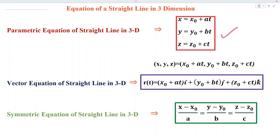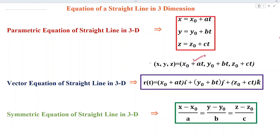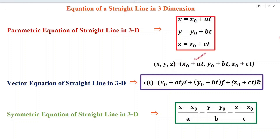After obtaining the parametric form and the symmetric form, we can easily derive the vector form for the equation of a straight line in 3D. Writing the left-hand side as the triple (x, y, z), this is denoted by R(t), the position vector. We write R(t) equals (x0 + a·t)·i plus (y0 + b·t)·j plus (z0 + c·t)·k, and this is called the vector form for the equation of a straight line in 3D.